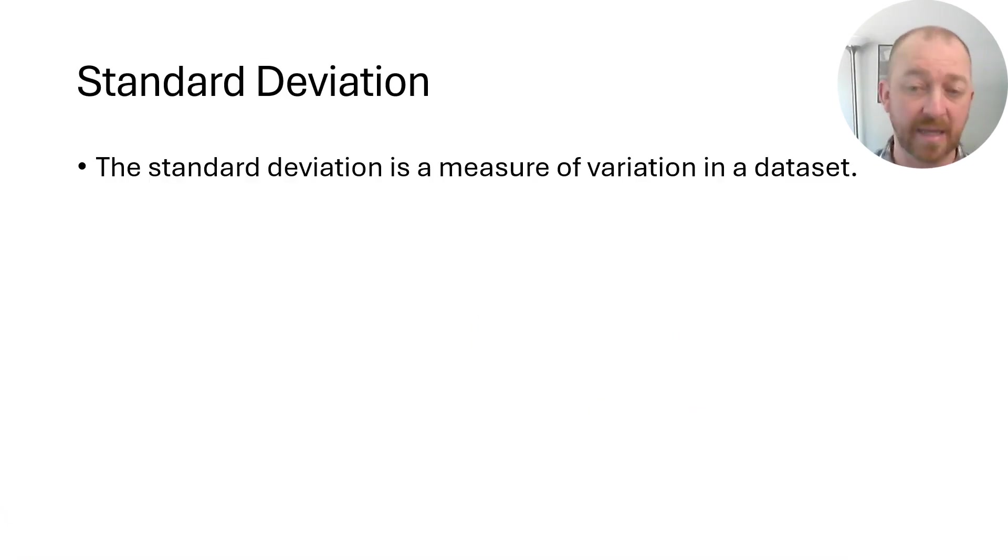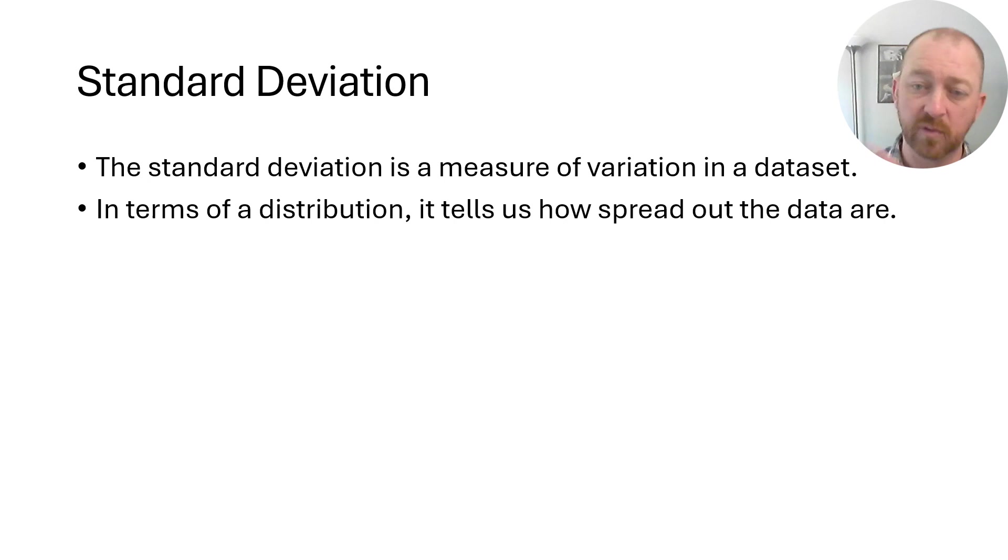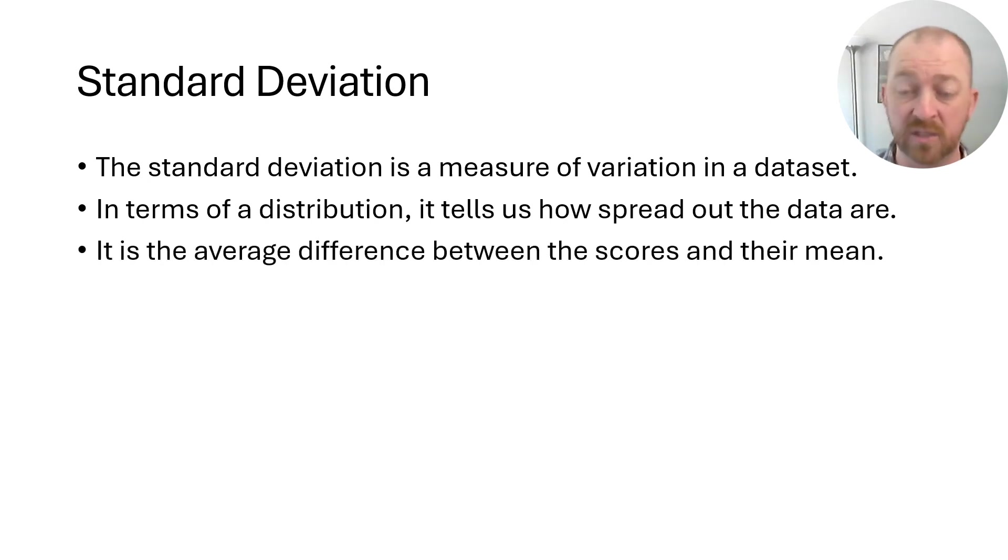So in sum, as we covered last time, the standard deviation is a measure of the variation in a data set. One way to think of that is, especially if you're looking at a histogram or a distribution, it shows us how spread out the distribution is. The bigger the standard deviation, the more spread out the distribution. The smaller the standard deviation, the more leptocurtic or less spread out the distribution is.